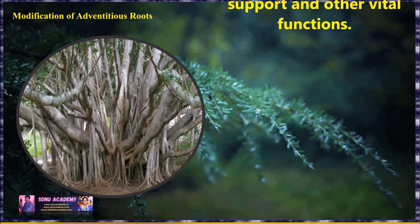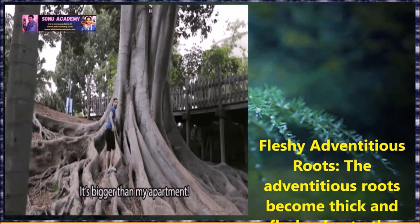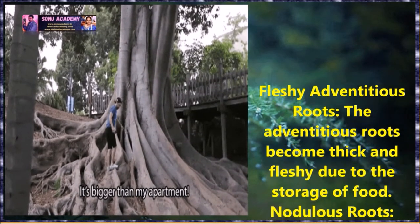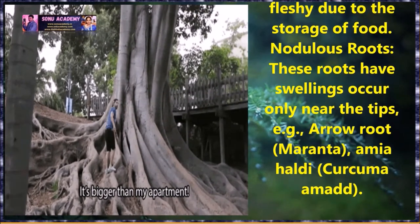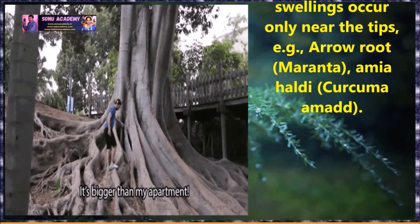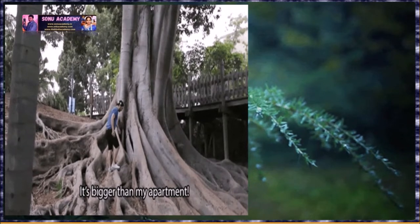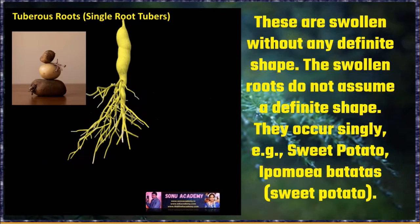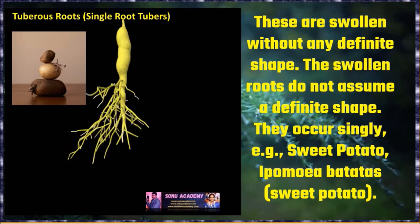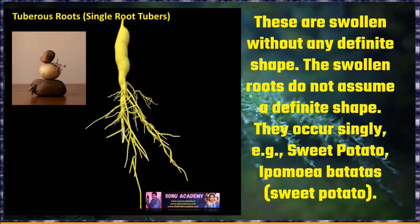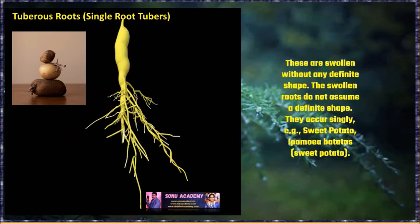Modifications of adventitious roots: adventitious roots are modified to perform several additional functions like food storage, mechanical support and other vital functions. The first one is fleshy adventitious roots — the adventitious roots become thick and fleshy due to storage of food. Nodule roots: these roots have swelling that occurs only near the tips. Examples: arrowroot, Curcuma, etc. Tuberous roots or single root tubers: these are swollen without any definite shape. They occur singly — like sweet potato, etc.